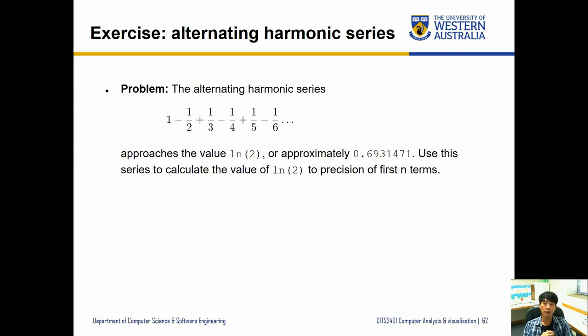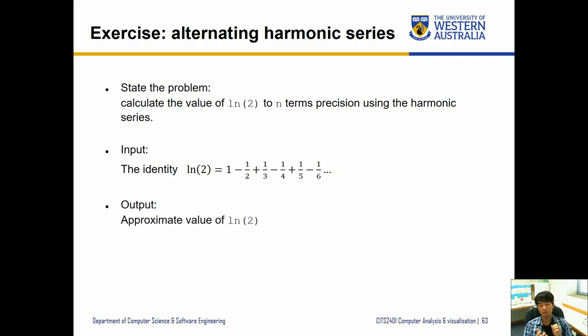Next exercise is alternating harmonic series. You probably know the harmonic series is this equation. Basically this approaches the value of natural log of 2, roughly that much. Use this series to calculate the value of natural log of 2 to precision of first n terms. We want n to be an input to this function. The first thing is to understand what the question is asking. We want to calculate natural log of 2 to n terms. The input is the identity natural log of 2, which equals that equation there. Output is the rough value of this. And n is an input to our function to specify how many terms we're going to accumulate. We're going to implement this function in our Python code.